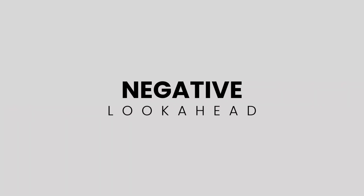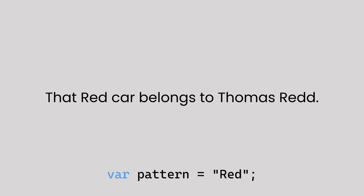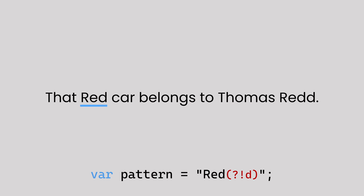Up next is the negative look-ahead. When placed after a character, this says match the current character only if it is not followed by the character I placed after the exclamation mark in the parentheses. Unlike the positive look-ahead, you'll get a match when X is by itself because at that point it's not followed by Y. The same applies if the character after it is anything but Y. For example, to match the word red in text that also includes the name Redd with an extra D, you'll place the word red in the pattern and use a negative look-ahead with the extra D inside it. This now only matches the color red and not the name.